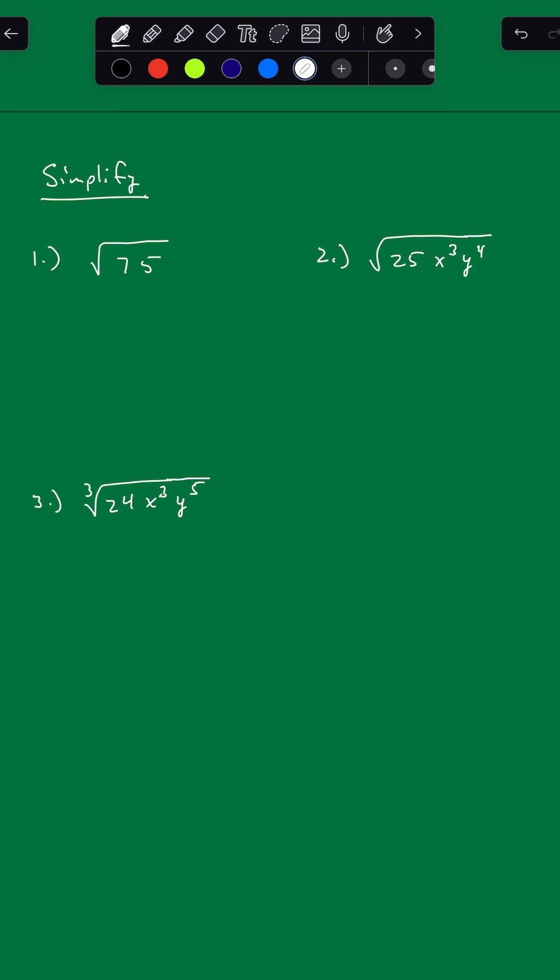So we got square root of 75. We got to look for a perfect square in 75. We know we can write that as 25 times 3.